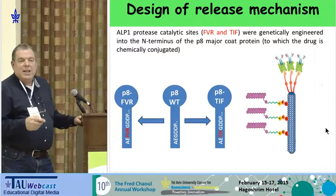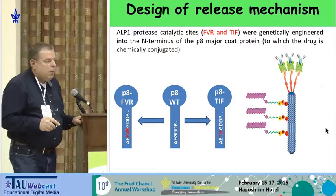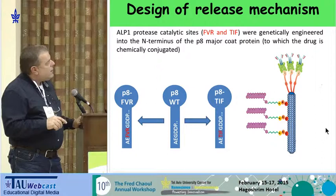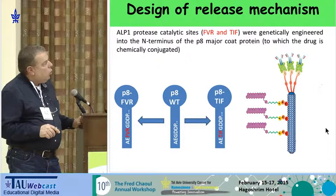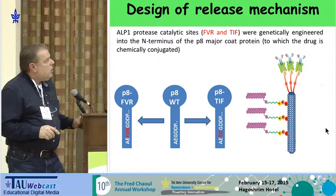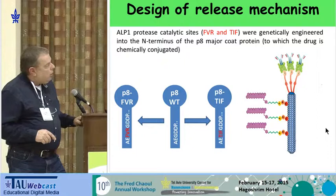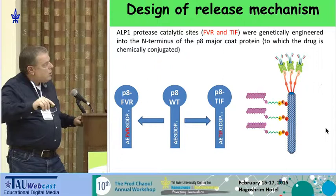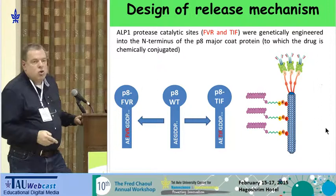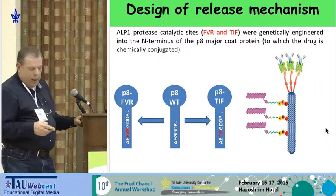What about the release mechanism? According to the literature, the major protease Aspergillus releases when in its pathogenic state is called ALP1, and it cleaves two tripeptides: FVR (phenylalanine-valine-arginine) or TIF (threonine-isoleucine-phenylalanine). We engineered the coat protein to encode either this sequence or that sequence, or as a control the unmodified sequence of the protein. We then measured how efficiently these sites are cleaved by the fungal protease.